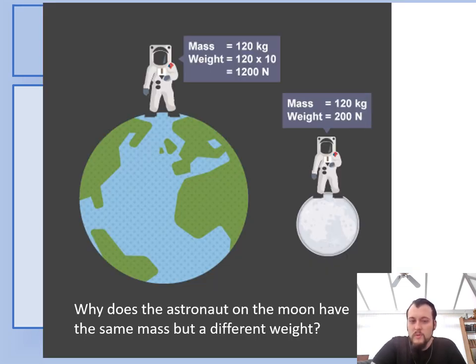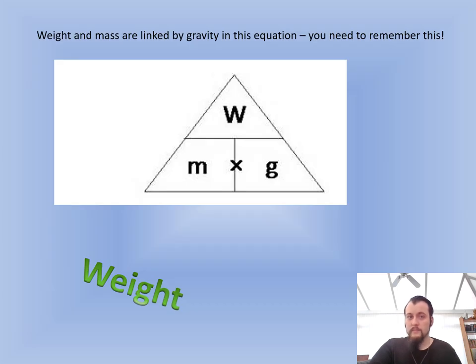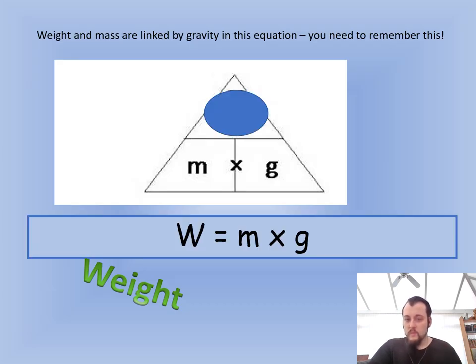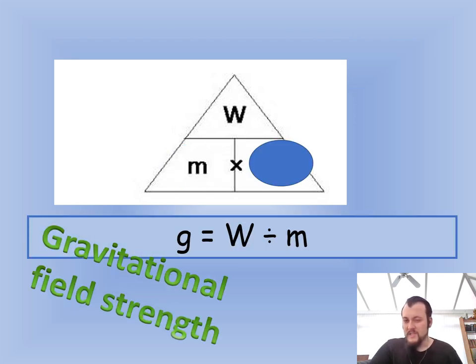So here, why does the astronaut on the moon have the same mass but different weight? We've talked about this multiple times. You can just see here, it's much clearer. So here you can see 1200 newtons on earth, 200 newtons on the moon. So that's six times less. These are rough numbers. It's just to give you the example. That's why they jump like that. Because the gravitational field is smaller on the moon because the mass of the moon is smaller. So here it is. Weight is mass times gravity. Mass is weight divided by gravity. And gravitational field strength, which is the long version of G, but gravity for now is fine. It's weight over mass.